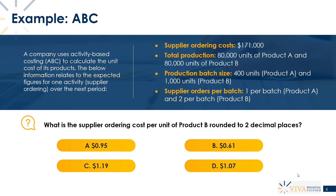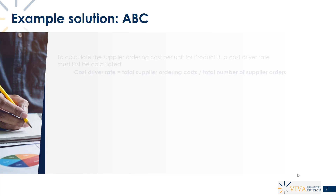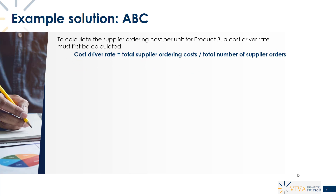What we're looking to do overall is first work out what we call a cost driver rate. To do that, we need our total supplier ordering costs — which we already know — and also the total number of supplier orders, because we want to work out a cost for one order. This is referred to as the cost driver rate.